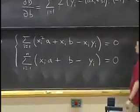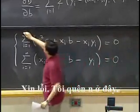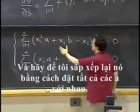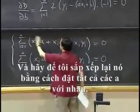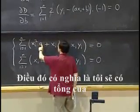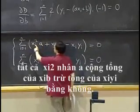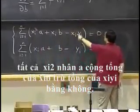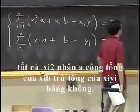Let me just reorganize that by putting all the a's together. That means I will have sum of all the xi squared times a, plus sum of xi times b, minus sum of xi*yi equals zero.